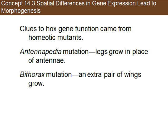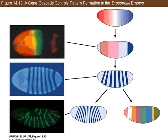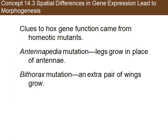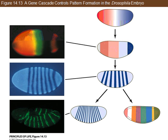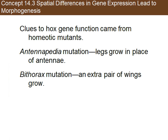The other mutation is the bithorax mutation. In a normal insect we have three parts: head, thorax, and abdomen. In the bithorax mutation — bi meaning two — there is a duplication of the thorax segment. If you duplicate that green section of the embryo, you end up getting two thoraxes, and because each thorax has a pair of wings, the fly ends up with six wings instead of the normal two. If you have any questions let me know, but that's it for this section.